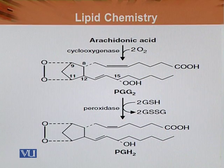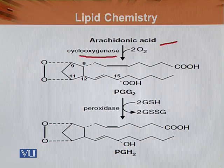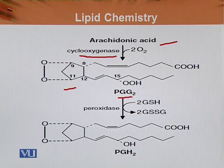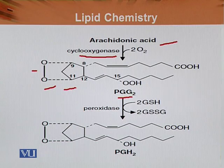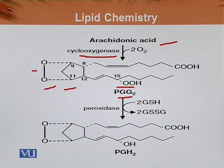Starting from arachidonic acid via the cyclooxygenase pathway, four oxygen atoms are added: two oxygens form the five-membered ring between carbon nine and eleven, as this is prostaglandin G2, while two oxygens are attached on the straight chain at carbon fifteen with a double -OH. So two oxygens are placed between nine and eleven, and two oxygens are attached at carbon atom number fifteen, forming prostaglandin G2.